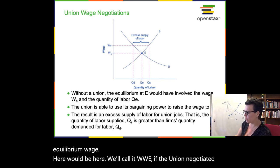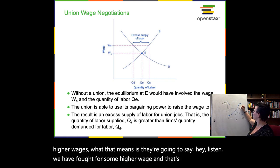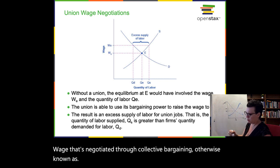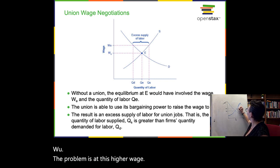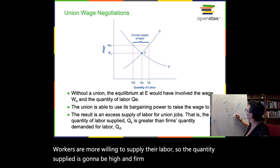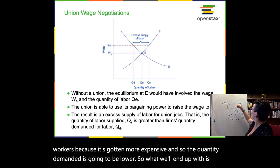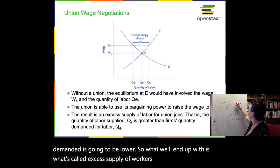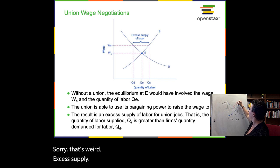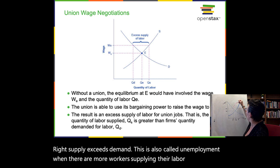The problem is at this higher wage, workers are more willing to supply their labor — so quantity supplied is going to be high — but firms do not want to hire as many workers because it's gotten more expensive, so quantity demanded is going to be lower. What we'll end up with is what's called excess supply of workers. Supply exceeds demand — this is also called unemployment. When there are more workers supplying their labor to the market than there are jobs for them, that's unemployment. One of the reasons that economists don't love unions is that it leads to unemployment.